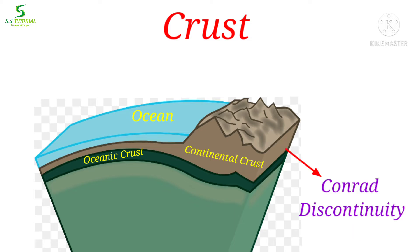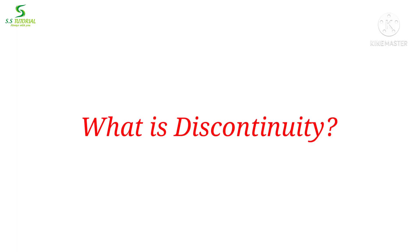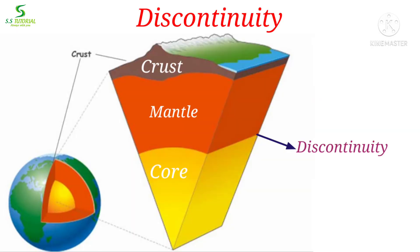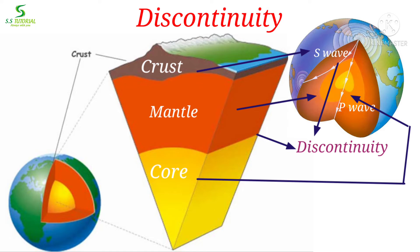These two different density layers — continental and oceanic crust — are separated by a discontinuity called the Conrad discontinuity. A discontinuity is an imaginary line which separates two different layers. According to geoscientists, the areas between the crust and core where the velocity of seismic waves changes are called discontinuities. There are a number of discontinuities present in the earth's interior, which we will know later.